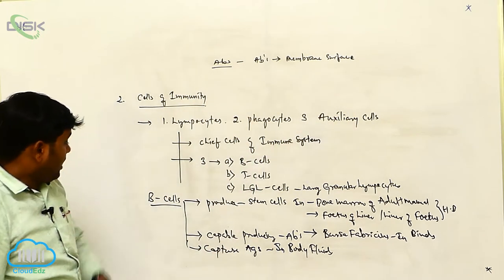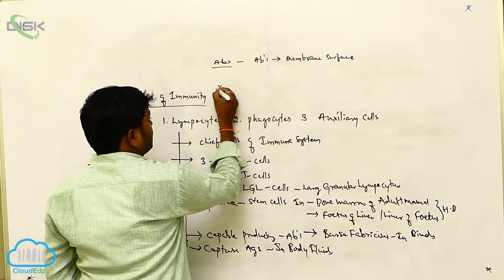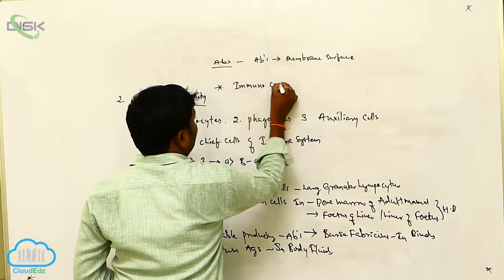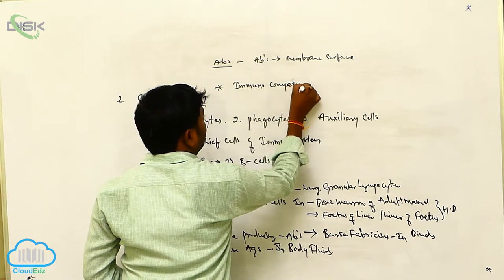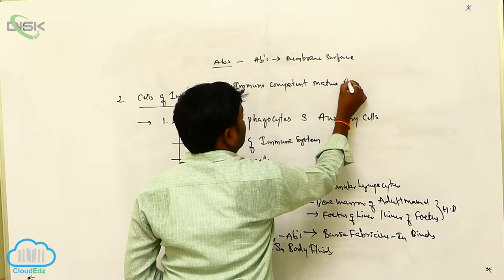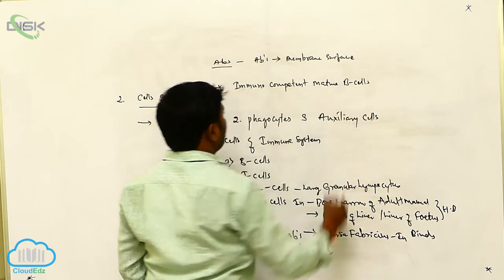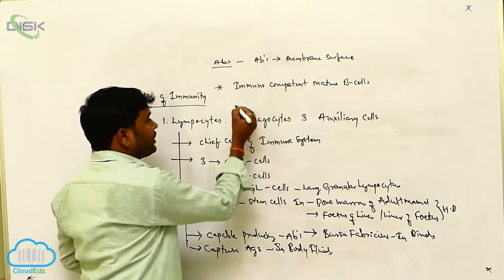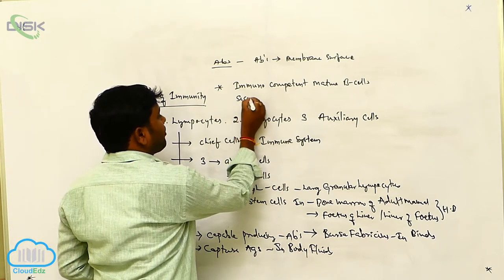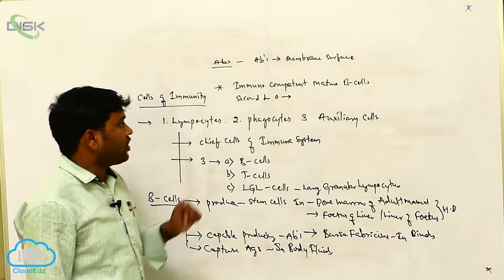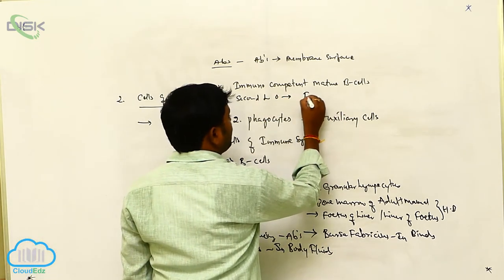These B cells are also called immunocompetent mature B cells. These immunocompetent mature B cells reach the secondary lymphoid organs, then transform into functional B cells.